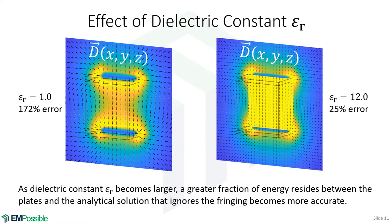What about the effect of a dielectric fill? Without changing the dimensions, adding a dielectric constant reduces the error again for the same reasons: the field between the plates becomes more uniform, and a greater proportion of the energy resides between the plates rather than outside. With a dielectric constant of 12 versus 1, the result is much more consistent with analytical assumptions. So with small separation and high dielectric constant, the analytical equation gives a very good answer. The poor results earlier were due to an extreme, unrealistic capacitor geometry.